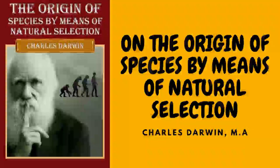An argument of great weight is that the above-specified breeds, though agreeing generally in constitution, habits, voice, coloring, and in most parts of their structure with the wild rock pigeon, yet are certainly highly abnormal in other parts of their structure. We may look in vain throughout the whole great family Columbidae for a beak like that of the English carrier, or that of the short-faced tumbler or barb; for reversed feathers like those of the jacobin; for a crop like that of the pouter; for tail feathers like those of the fantail. Hence it must be assumed not only that half-civilized man succeeded in thoroughly domesticating several species, but that he intentionally or by chance picked out extraordinarily abnormal species, and further that these very species have since all become extinct or unknown. So many strange contingencies seem to me improbable in the highest degree.